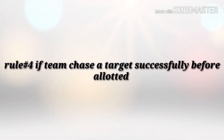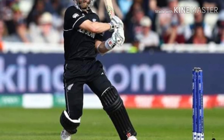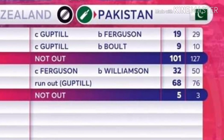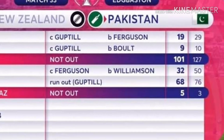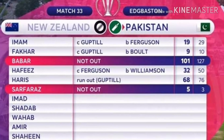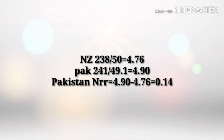So 9.2 minus 6.72 equals 2.48 for Pakistan. In the fourth type of match, if a team chasing a target successfully chases it, the score is divided by how many overs they actually played while chasing. In the 2019 World Cup, New Zealand scored 238 runs in 50 overs with an average of 4.76. Pakistan came to bat and scored 241 runs, chasing the target in 49.1 overs, giving an average of 4.90. So 4.90 minus 4.76 equals 0.14 Net Run Rate for Pakistan.